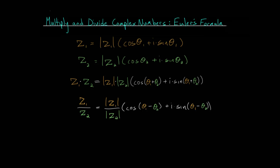In this video, I'd like to continue talking about multiplying and dividing complex numbers using Euler's formula. We have the formulas for multiplying and dividing two complex numbers when we write them in their polar form, where we have the magnitude and the direction using the angle measured relative to the positive real axis. When we multiply these numbers, we multiply the magnitudes and add their angles. And when we divide, we find the quotient of their magnitudes and subtract the angle of the denominator from the angle in the numerator.